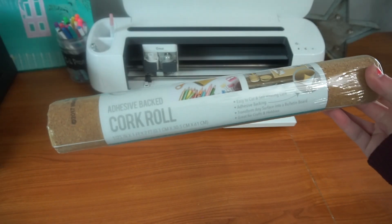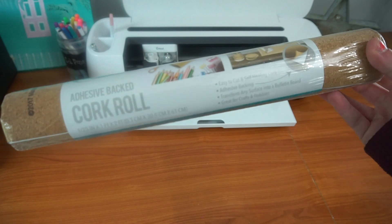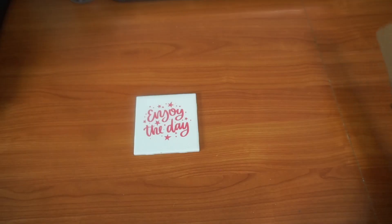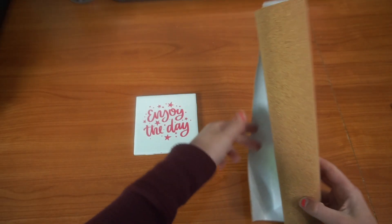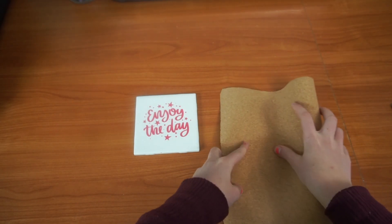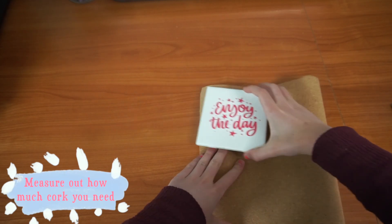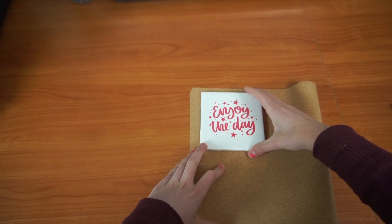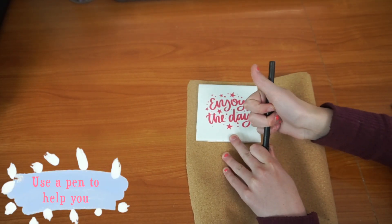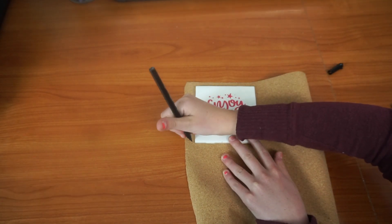To prevent the tile coaster from scraping any table surfaces, grab an adhesive back cork roll. I found this cork roll at the Joann store. Place the tile onto the cork roll to measure out how much cork roll you need to cut. To help you remember your measurements, use a pen to mark down the measurements.